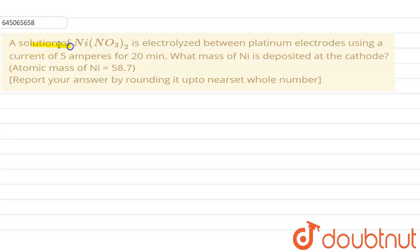It is given that a solution of nickel nitrate is electrolyzed between platinum electrodes using a current of 5 amperes for 20 minutes. Now we have to find out what mass of nickel is deposited at the cathode. Atomic mass is given as 58.5 grams. So let's see how this question will be solved.